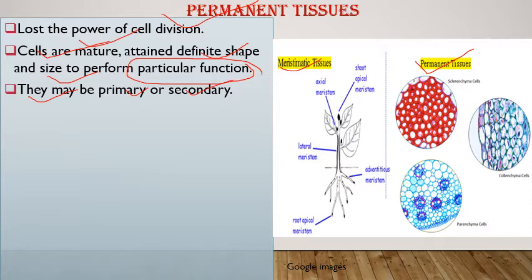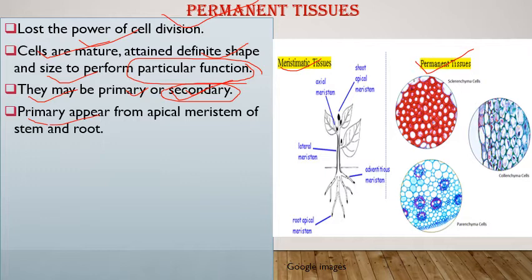Primary tissues are formed from apical meristem — for example, tissues formed from apical meristem are known as primary permanent tissues. Secondary tissues are made from lateral meristem — for example, tissues formed during growth in girth. Cork cambium in the outer region and interfascicular cambium in the vascular region are both examples of lateral meristem, and they produce secondary permanent tissue.